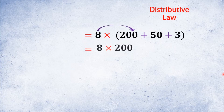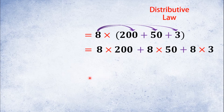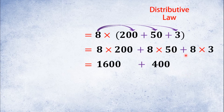Let's say 8 times 253. For example, 8 times 2 is 16, so 8 times 200 is 1600. Then 8 times 5 is 40, so 8×50 is 400. And 8 times 3 is 24. So now we have: 1600 plus 400 is 2000, plus 24, giving us 2024.